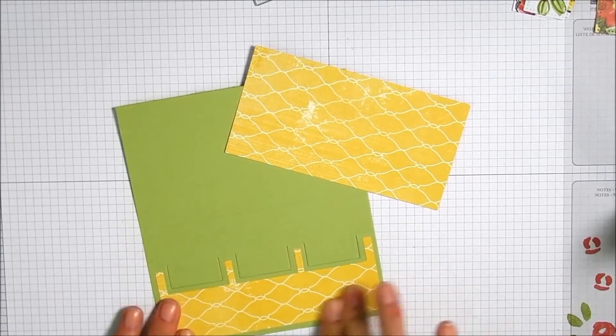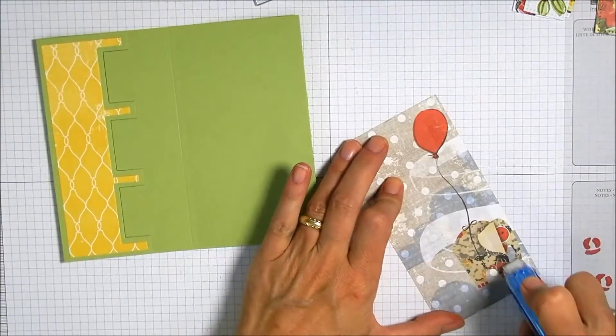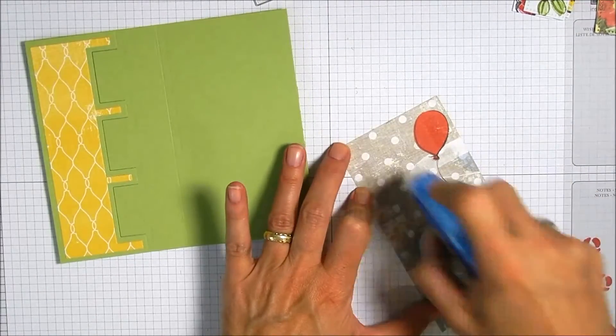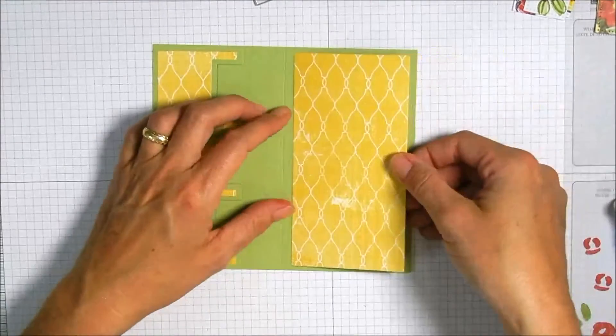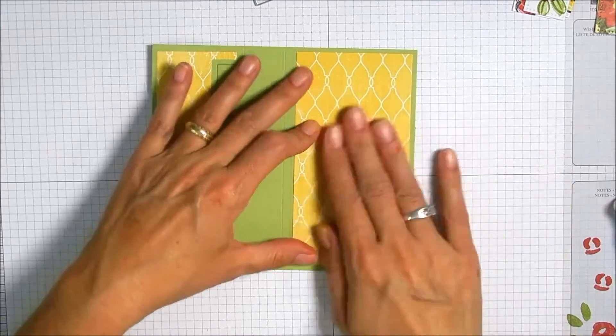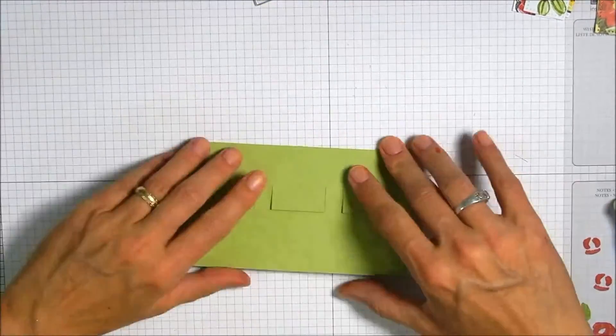I'm putting that down with the two-way glue pen and just making sure that those little rectangles are adhered very well. On the big rectangle for the other side I'm just gonna go ahead and use the regular old tape runner because that's a big space and much easier to cover.